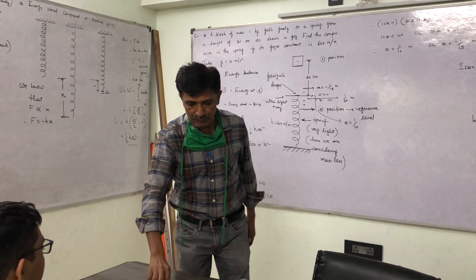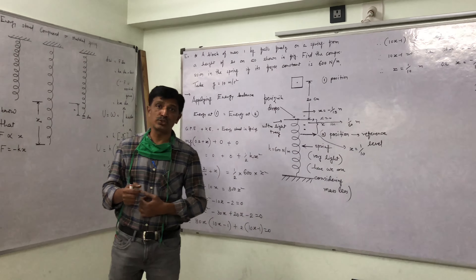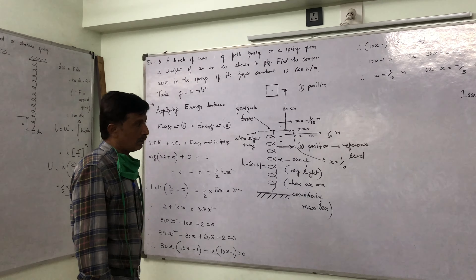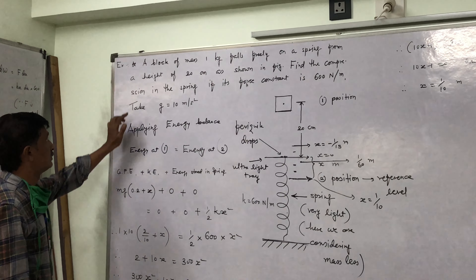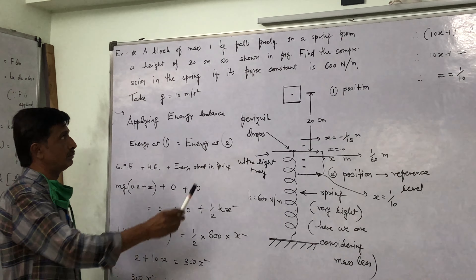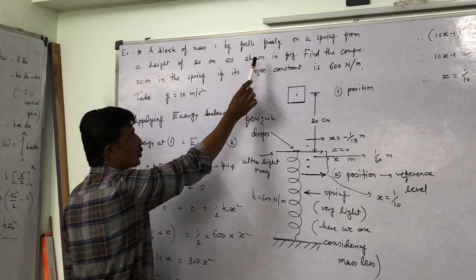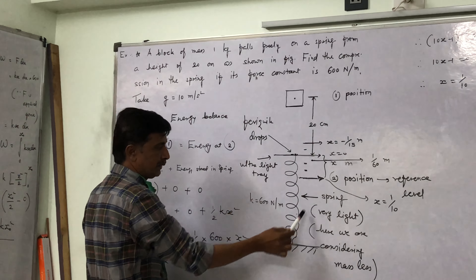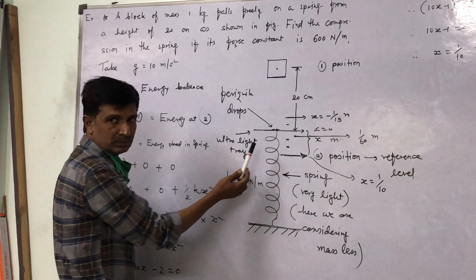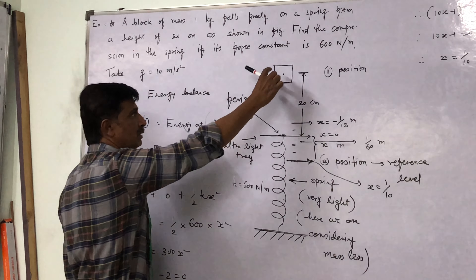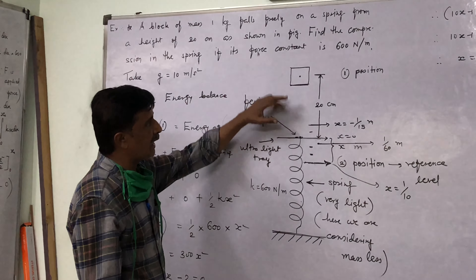To find the answer, I am giving one interesting example. I am repeating: I am giving free fall to a body from a certain height, and we want to find at which location, at which instant, its velocity becomes maximum. A block of mass 1 kg falls freely on a spring.